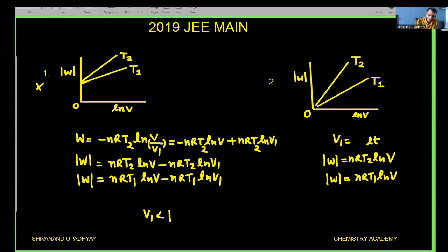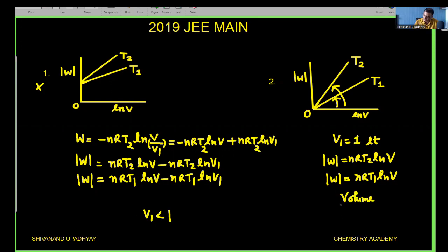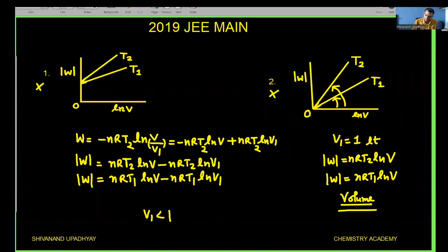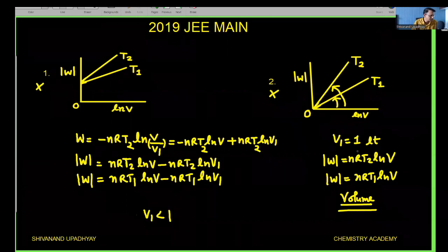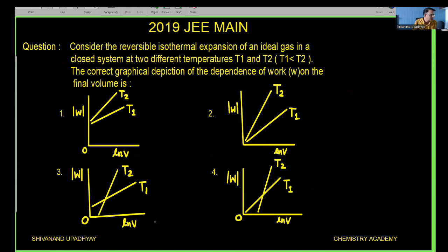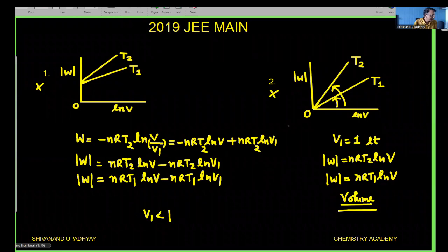For option 1, the graphs at T1 and T2 meet on the y-axis at the same point, meaning the intercepts are equal. However since T1 and T2 are different, the intercepts cannot be equal even if V1 is the same in both cases — so option 1 is wrong. For option 2, the graph passes through the origin, meaning the intercept is zero. The slopes are nRT2 and nRT1, which is fine since T2 > T1. But the intercept is zero only if the initial volume is exactly one liter, and since the initial condition is not mentioned, we cannot confirm this.